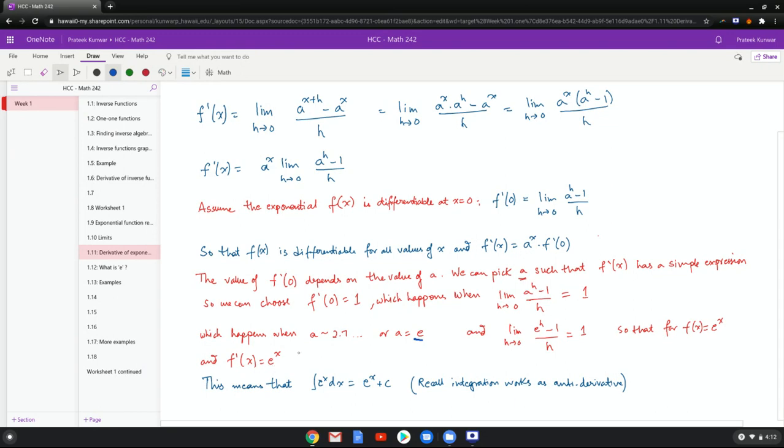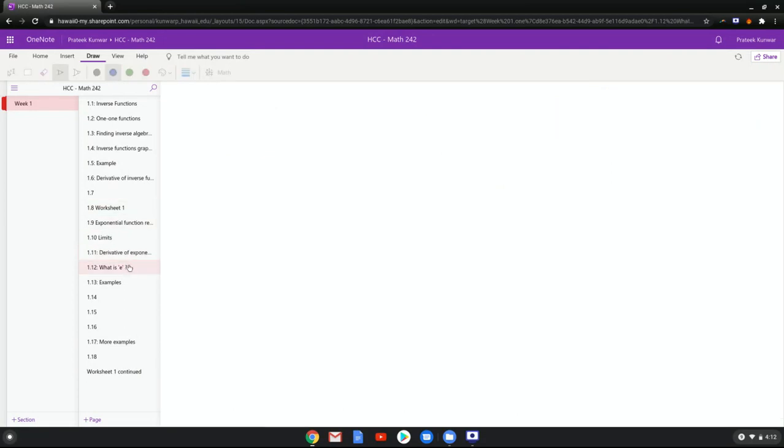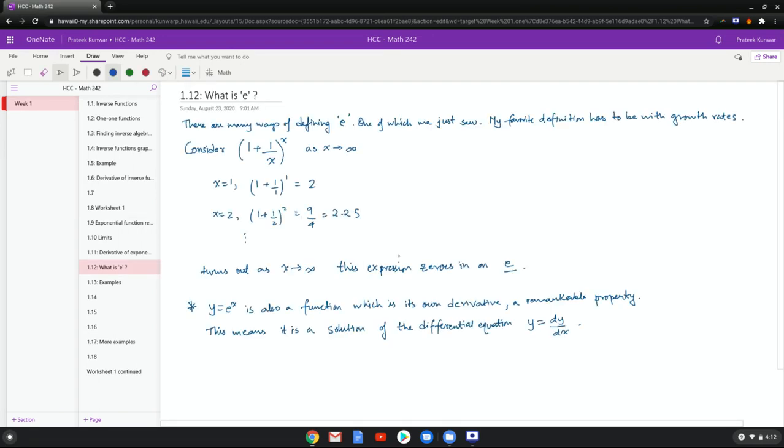So it's a really neat function, it's its own derivative. But this also means that the integration of e to the x or the anti-derivative is e to the x plus c. Now this e thing is pretty wild, it's its own derivative and its own anti-derivative. Now there are many ways of defining e, one of which we just saw. It's defined as the value of a which makes the limit one.